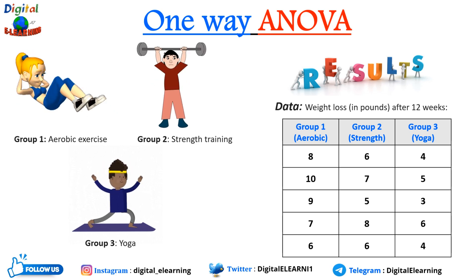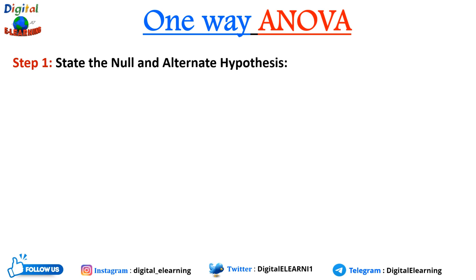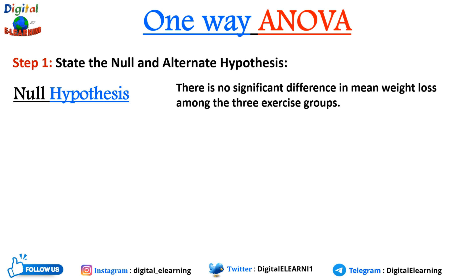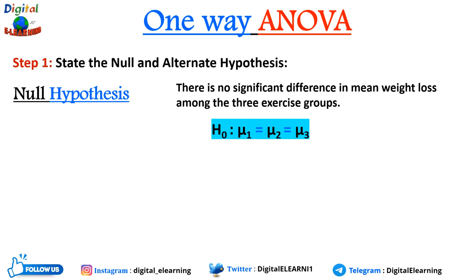Step one is to state the null and alternate hypothesis. The null hypothesis states there is no significant difference in the mean weight loss among the three exercise groups — whether aerobic exercise, strength exercise, or yoga exercise. We state H0: μ1 = μ2 = μ3, meaning there is no difference in the mean weight loss.